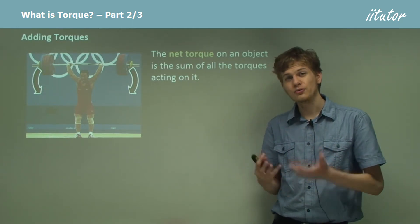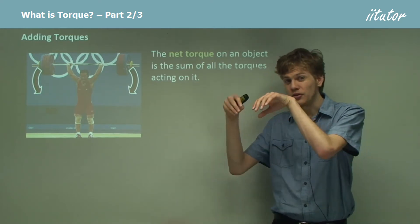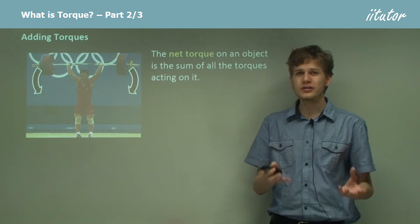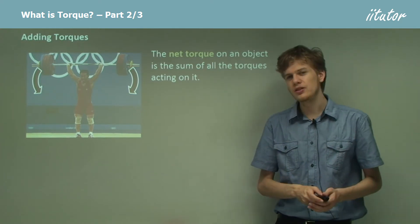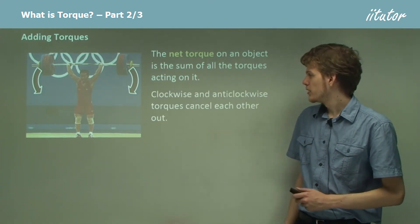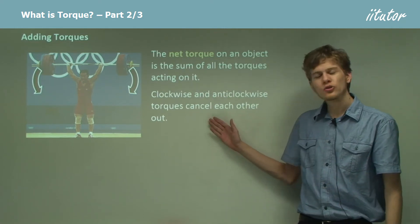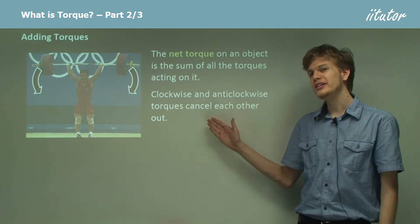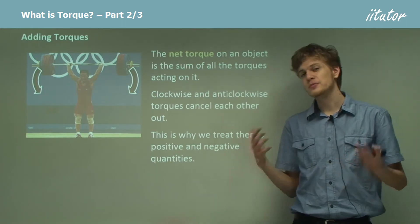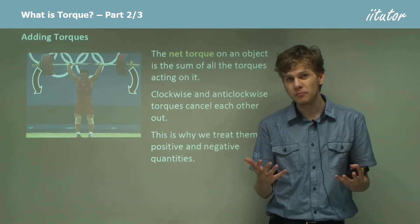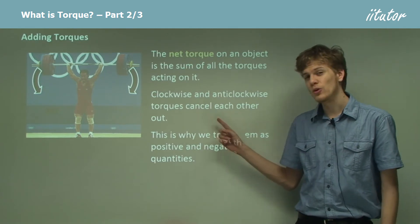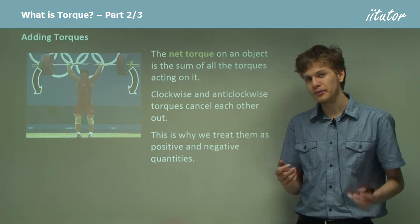On the other hand, if we have two different torques pushing a spanner in the same direction, then the net torque on that spanner will be greater than either of the individual torques. So clockwise and anti-clockwise torques will cancel each other out. And this is why we can treat them as positive and negative, because positive and negative numbers, just like clockwise and anti-clockwise torques, will cancel each other out.